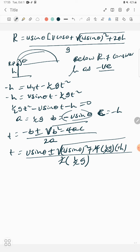Simplifying: negative times negative gives positive, so we have u sine theta plus square root of u sine theta the whole squared plus 2gh, all over g.